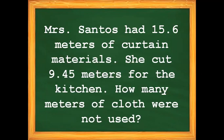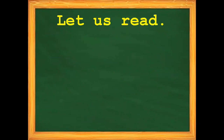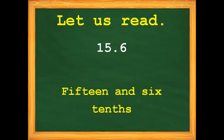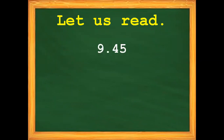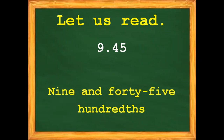First, let's read the given decimal numbers. How do we read this decimal? We read this as 15 and 6 tenths. Next, how do we read this decimal? 9 and 45 hundredths.